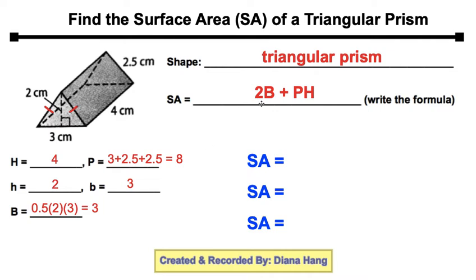Now we're going to take this formula and replace our values. Our base of the triangular base is 3. Our perimeter of the triangular base is 8. And the height of the triangular prism is 4. Do some simple calculations, and your surface area will be 38 centimeters squared.